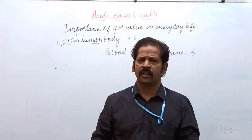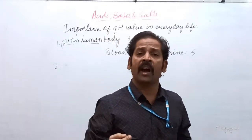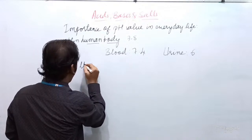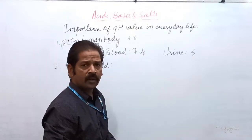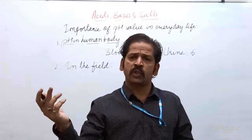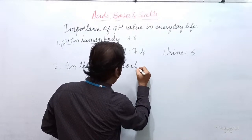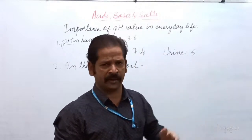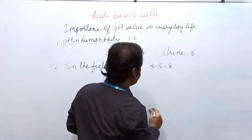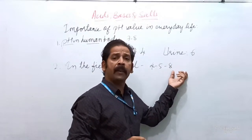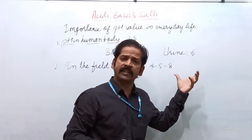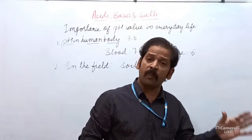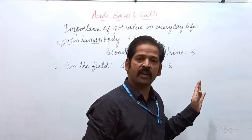The second point is about pH in our backyard — meaning the soil in agriculture. How is pH useful for agriculture purposes? The pH of a soil ranges from 4.5 to 7.5 up to eight. A pH of 4.5 is totally acidic and eight is slightly alkaline. Every crop will grow in a different pH range of soil.